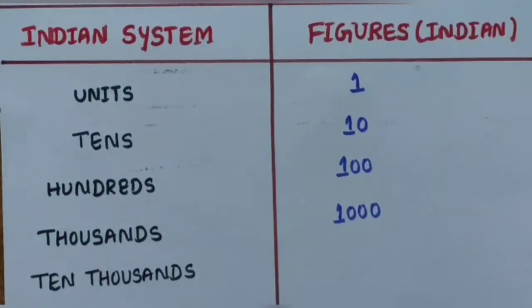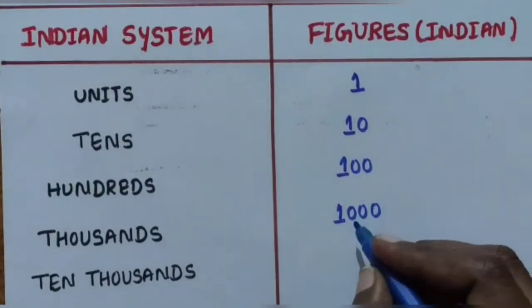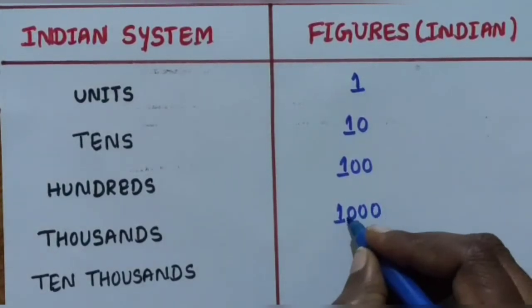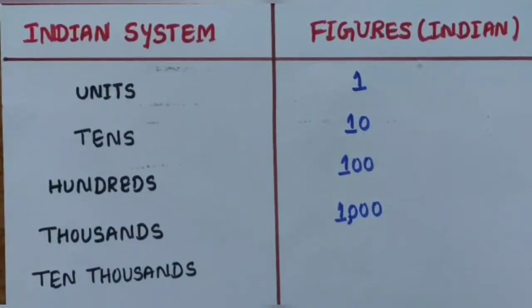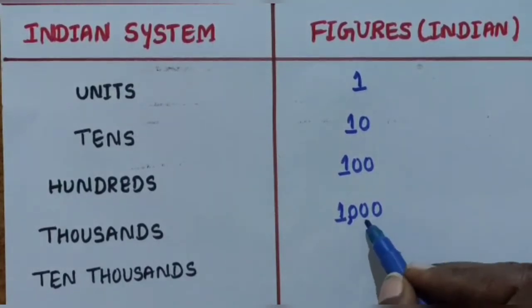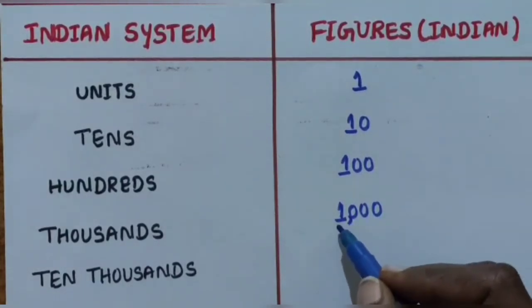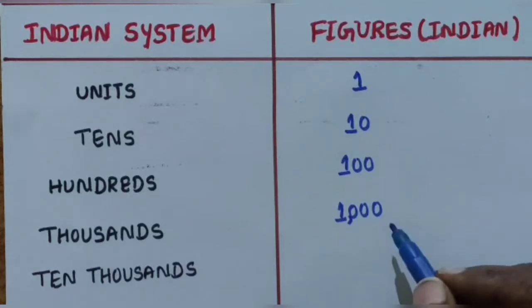The commas are used to mark thousands - that is 3 digits from the right side of the numbers. So we have: Units, Tens (10), Hundreds (100), and Thousands (1,000).